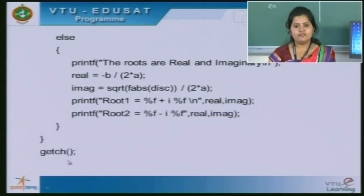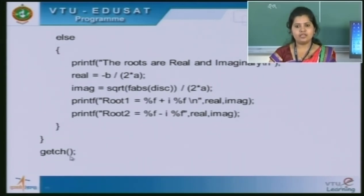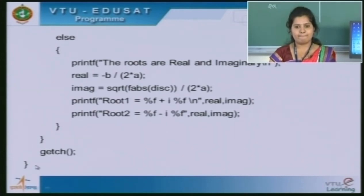Then we use a function called getch — it is nothing but getchar. When we enter a character from the keyboard, it exits the program. Afterwards, we close the flower bracket, which is the end of our program.